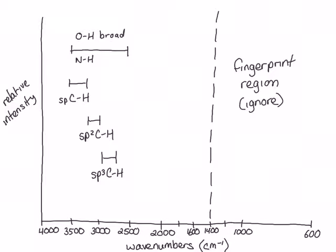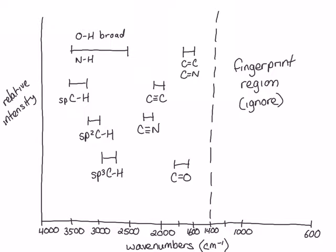Other types of bonds and functional groups we can recognize from an IR spectrum include bonds from carbon to carbon and carbon to other atoms. Carbon-carbon double bonds and carbon-nitrogen double bonds show up in the 1680 to 1600 region. Carbon-carbon triple bonds show up in the 2200 to 2000 region. Carbon-nitrogen triple bonds are slightly higher in energy and show up in the 2300 to 2200 region. Finally, the most obvious stretch in an IR spectrum is a carbon-oxygen double bond, which shows up in the 1750 to 1650 region.